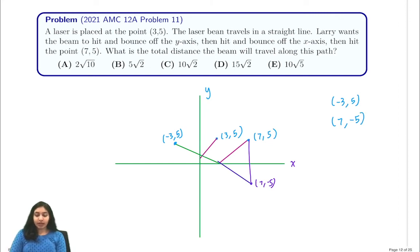And now we apply the distance formula and get that our answer is going to be the square root of 10 squared plus 10 squared which is 10√2. And that's option choice C.